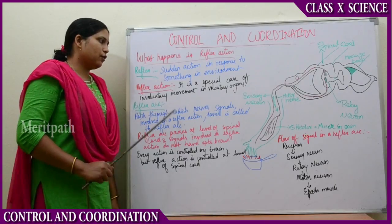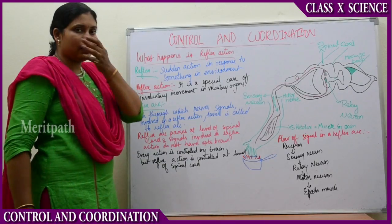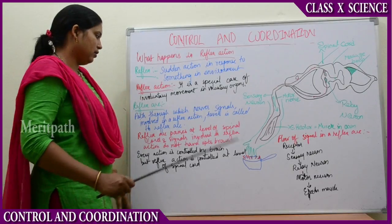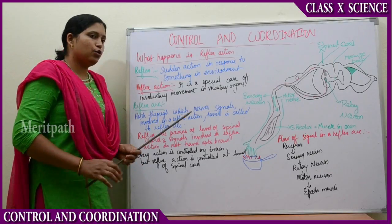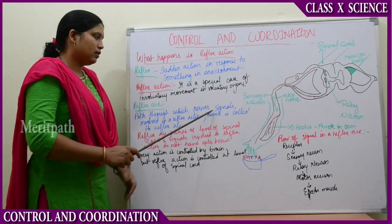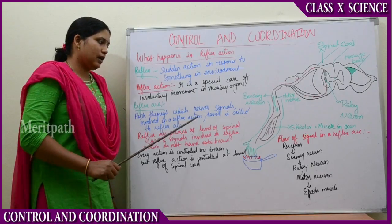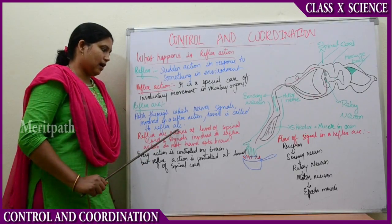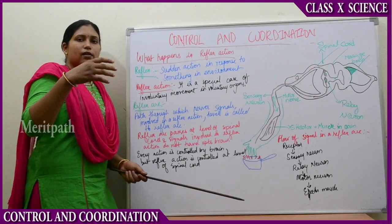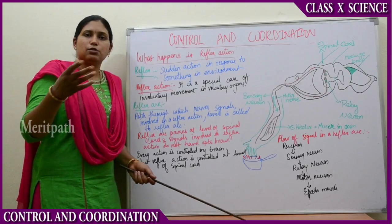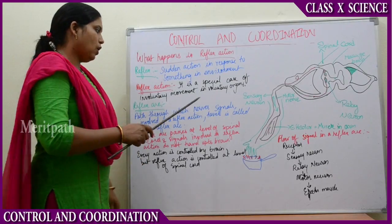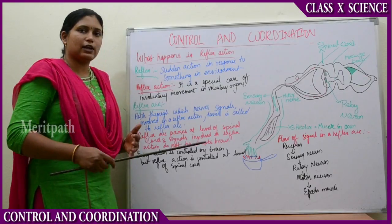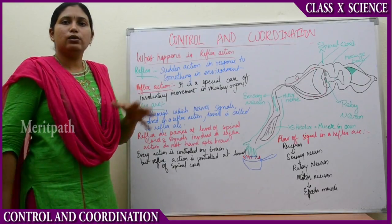What is the reflex arc? This is the diagram of a reflex arc. The reflex arc is the path through which the nerve signals involved in a reflex action travel. All the nerves involved in the transmission of nerve impulses in a reflex action — how they travel — is explained by the reflex arc.